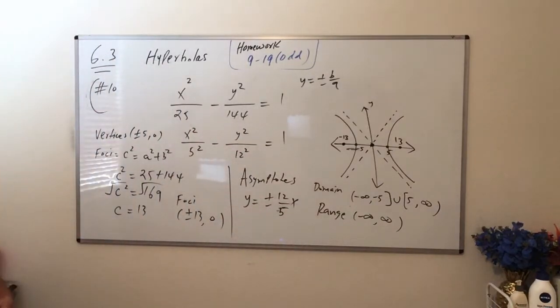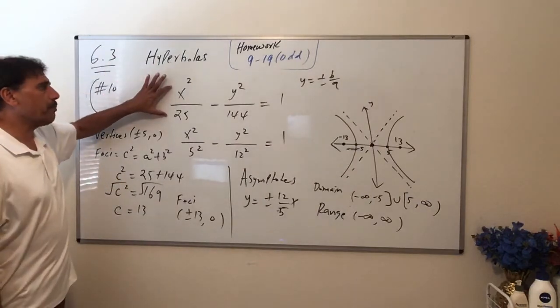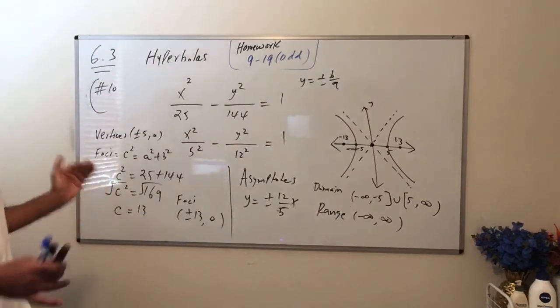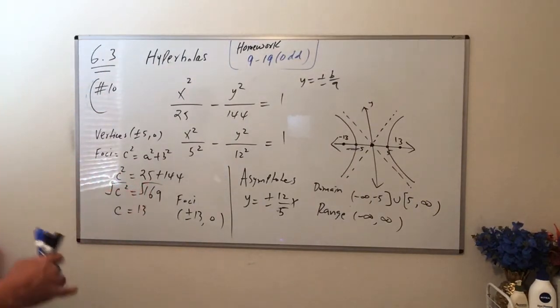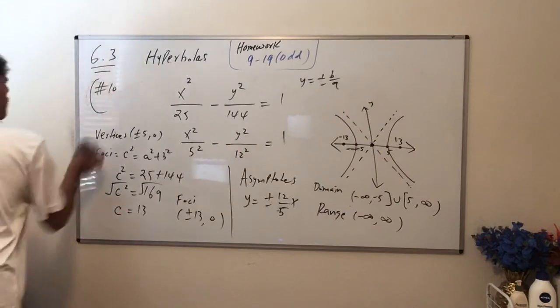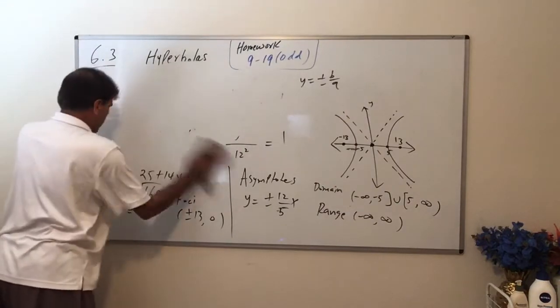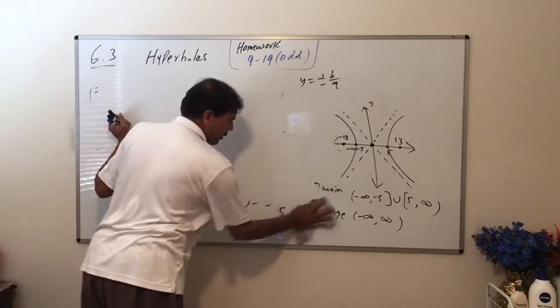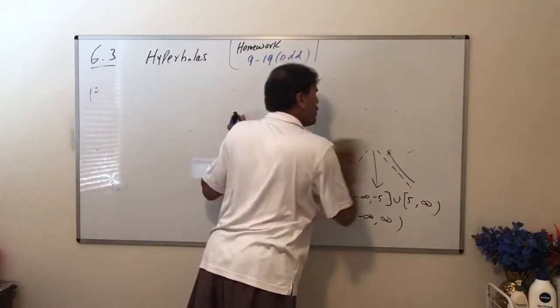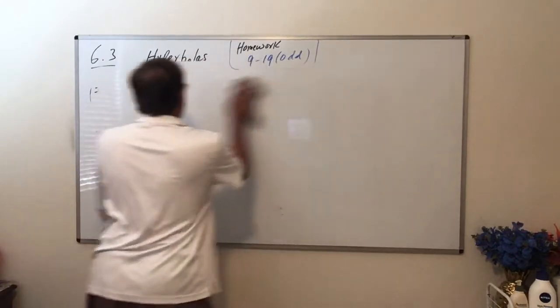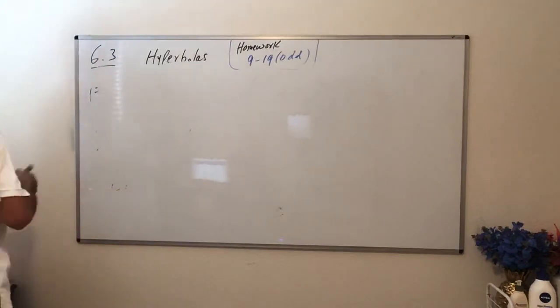So again, if the x-squared term is positive, your main axis can be the x-axis, so your branches are going to open left and right. Let me show you one more example. Then I will show you when exactly your hyperbola is going to open upward and downward. So here's number 18 from your textbook.